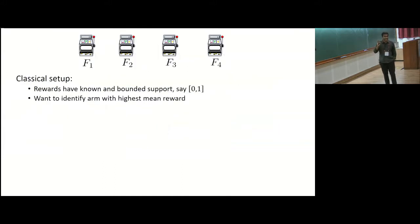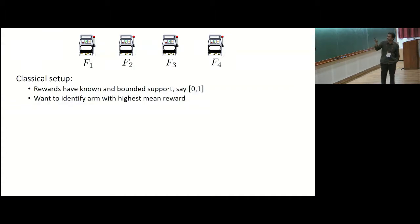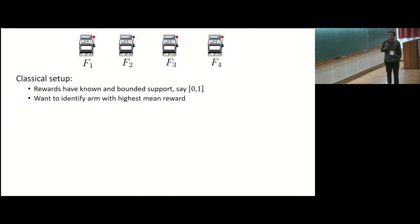The classical setup, which has been studied for decades, is one where the support of the reward distribution is assumed to be both known as well as finite. Without loss of generality you can pretend the support is in the interval [0,1], so your reward is always between 0 and 1, and the classical goal is to find the arm with the highest mean reward.